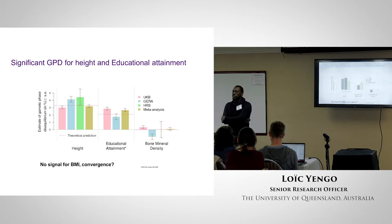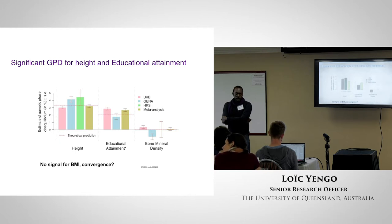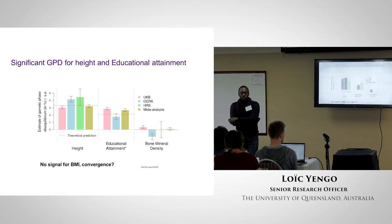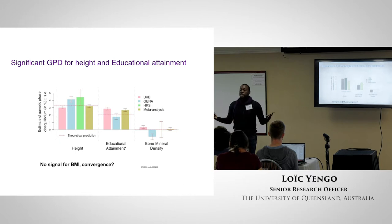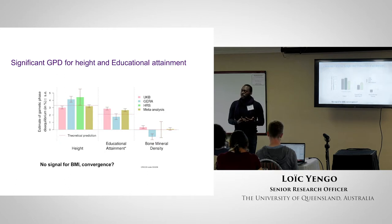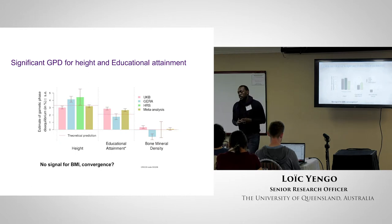What do you mean by mutable? Are you talking about the polygenicity — the number of variants controlling the trait? I think it was more about whether a trait can change over time, and I think there must be some relationship with heritability. Not necessarily — it depends on when you measure it. If there's more error or environmental variance, that makes the denominator bigger.